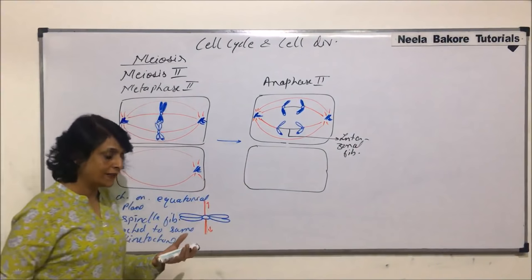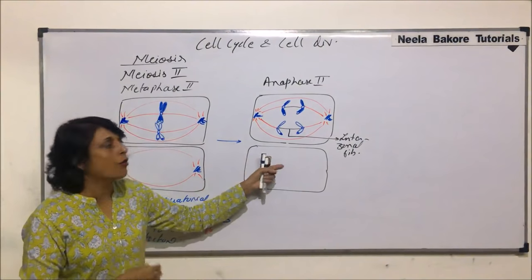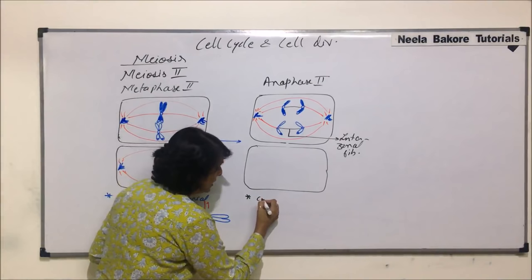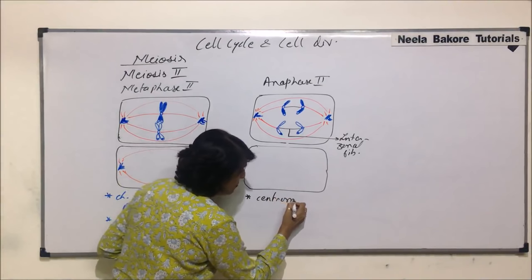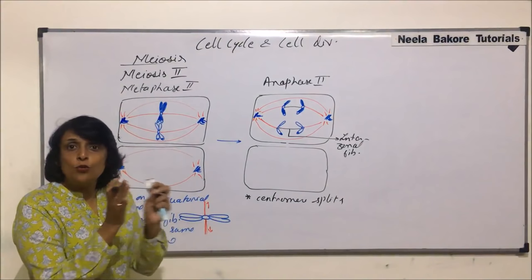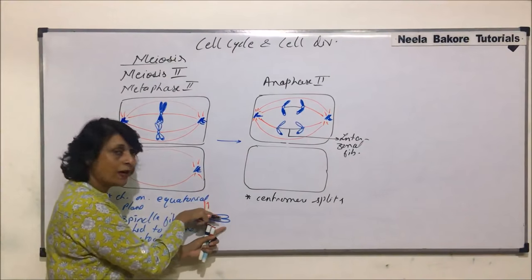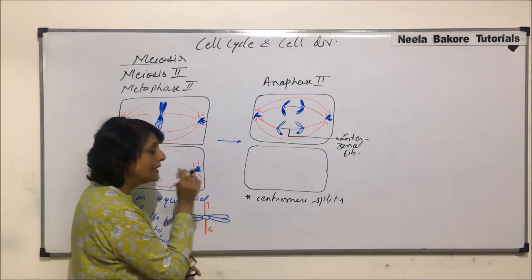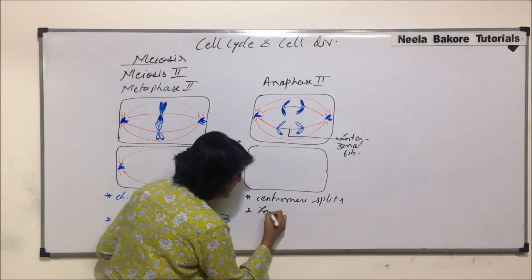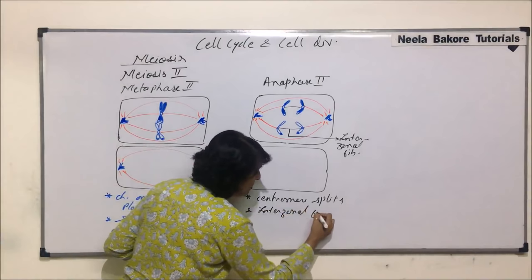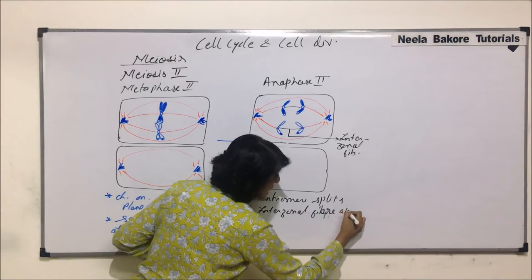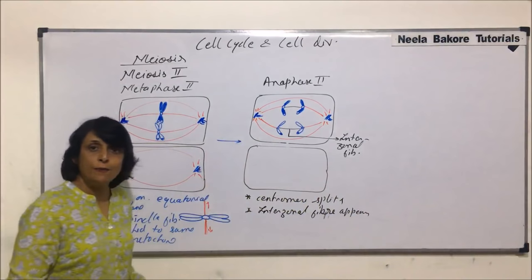The same thing is going to happen in the other cell also. What are the changes in this case? The centromere splits, and because of this splitting, the two chromatids — the ones which had the original DNA and the copy DNA — they have separated. When the centromere splits, the interzonal fiber appears.